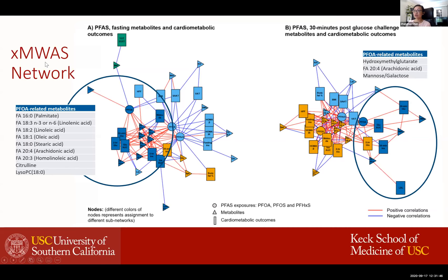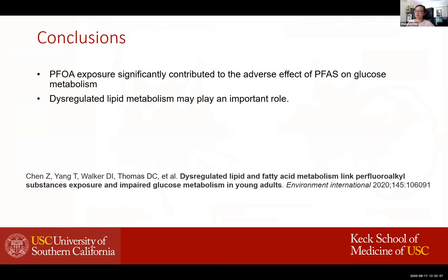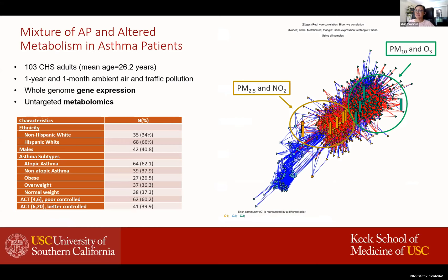We also want to understand what could be the specific metabolomic signatures playing the most important role in these pathways. Using a network analysis approach, we can integrate the exposure — here PFOA, PFAS, and PFHxS — and the metabolites represented by triangles, and multiple metabolic outcomes like glucose traits in those bars. With this three-layer integration of network analysis, we can find submodules integrating with different clusters of exposure. For example, PFOA exposure is related with different amino acids, suggested to be unsaturated and saturated long-chain fatty acids, and also related with multiple glucose traits including 30-minute glucose area under the curve. From these results, we can conclude that PFOA is the most significant contributor to impaired glucose metabolism, and dysregulated lipid metabolism may play an important role.